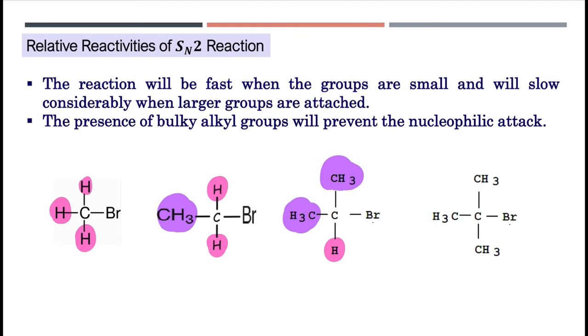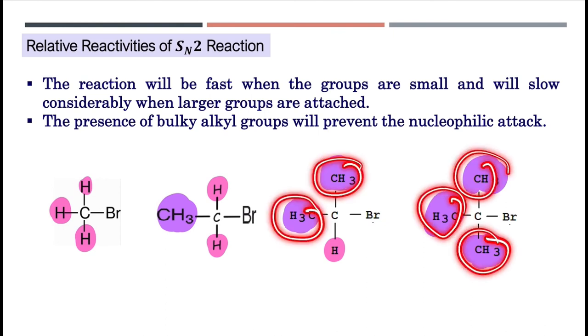Tapi kalau yang ini, dia ada dua bulky groups. Dan yang ini, dia ada tiga bulky groups. So nucleophile tidak boleh attack daripada belakang. Bila nucleophile tidak boleh attack daripada belakang, SN2 reaction itu tidak boleh berlaku. Itu sebabnya SN2 reaction dia prefer methyl dan juga primary haloalkane.